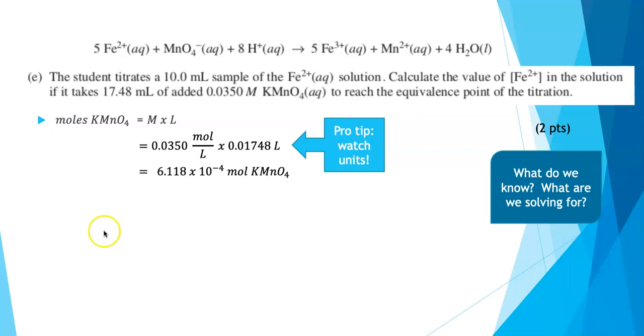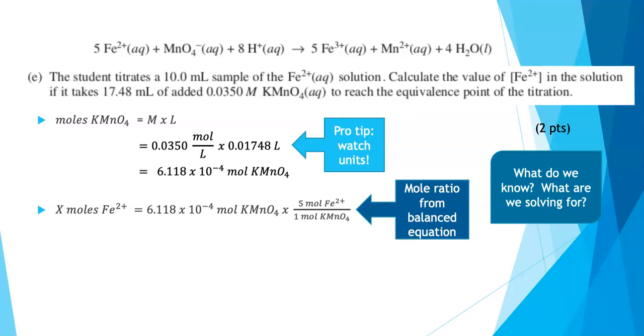The rest of the problem was worth the other point. If I want to find how many moles of iron 2 plus reacted with the 6.118 times 10 to the minus four moles of permanganate, I need to go back to my balanced equation and get the mole ratio. For every mole of permanganate ion that reacted, five moles of iron 2 reacted. So I'm pulling that mole ratio from the balanced equation. And then it's very easy to calculate the moles of iron 2 plus present in that original sample.